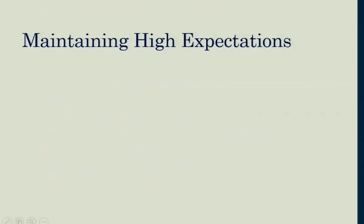The important thing is to maintain high expectations. We need to support students without lowering the bar. UDL doesn't mean you do whatever kids need until they get A's - it means you do everything you can so that everybody has an equitable opportunity to earn that A. You don't change the objective. In all of our fields, we have really high expectations for the knowledge, skills, and professional dispositions students have to have. You want to match the environment to their abilities and needs so they have a leveled playing field.